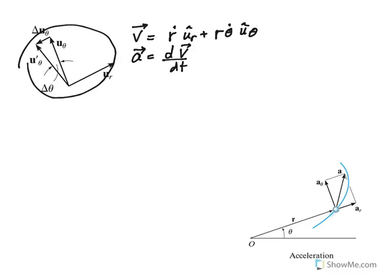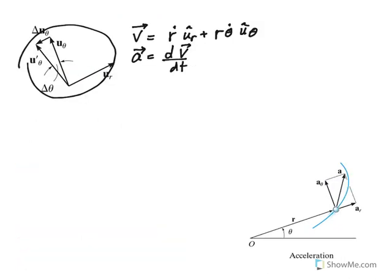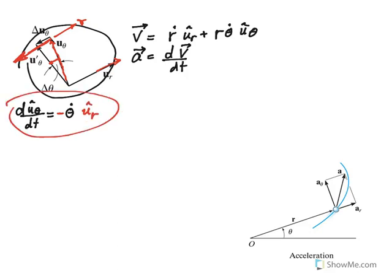Before taking the derivative for acceleration, let's look at the derivative of U_theta with respect to time. As the transverse unit vector U_theta changes direction, it turns out that its derivative is also theta-dot, but the change acts in the negative direction of the radial axis. So the derivative of U_theta with respect to time is minus theta-dot times U_R.